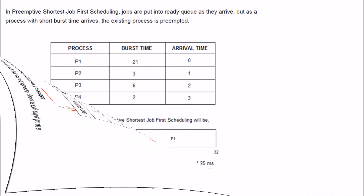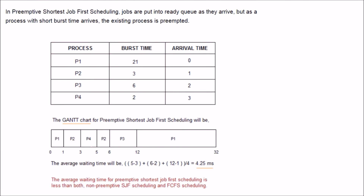P4 requires only 2 cycles, so it completes quickly. Then P2 needs only one remaining cycle and completes. P3 arrived at time 2 but had to wait due to P2 and P4. P3 starts at time 6. P1 had already completed 1 cycle, so it waits from time 1 to time 12 — a wait of 11 cycles.